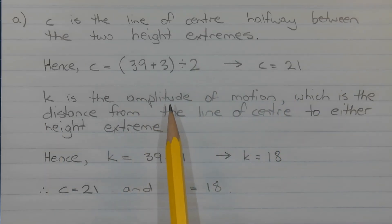And k is the amplitude of motion which is the distance from the line of centre to either height extreme. Hence k equals 39 minus 21. Alternatively it could be 21 minus 3. So k equals 18. Therefore c equals 21 and k equals 18.